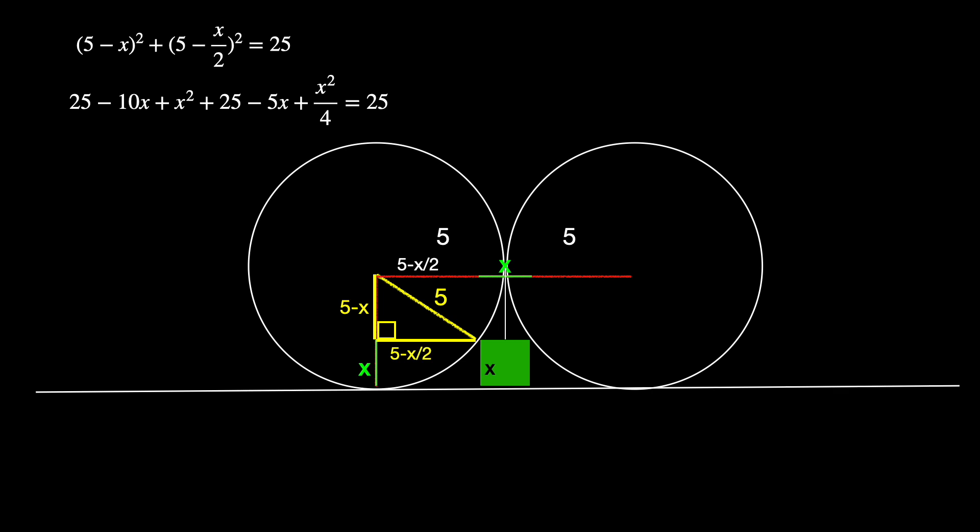Now let's subtract 25 from each side of the equation and combine some like terms. We'll now multiply the equation by 4 and divide it by 5 and we get this trinomial, which we can factor as x minus 2 times x minus 10.